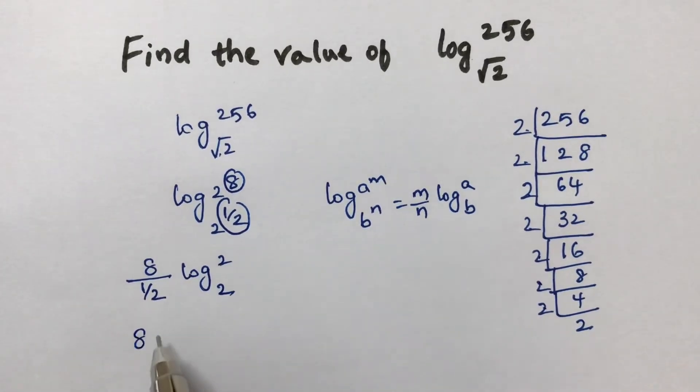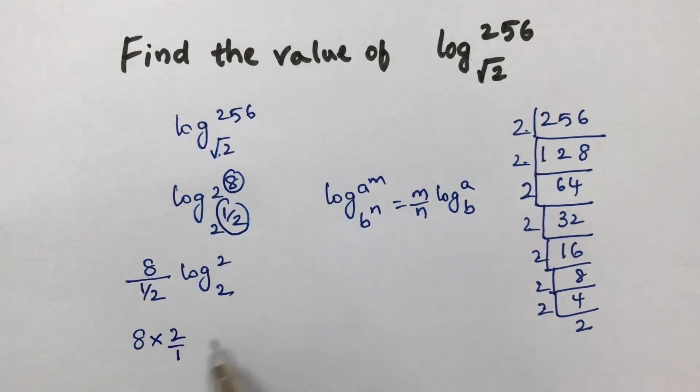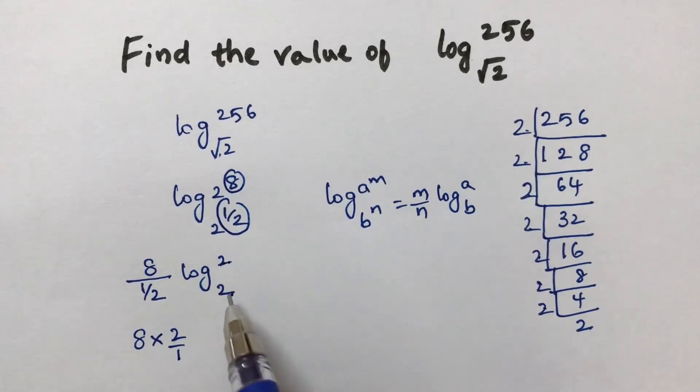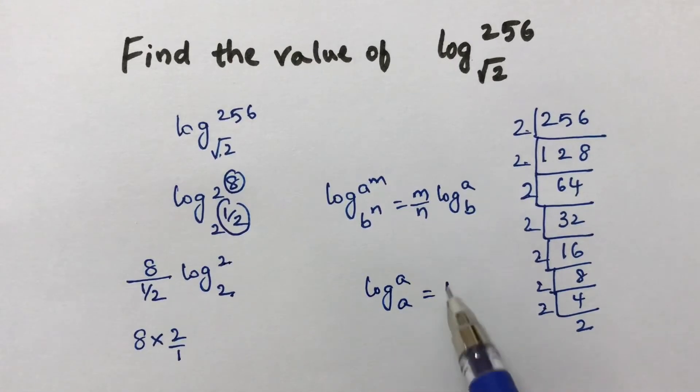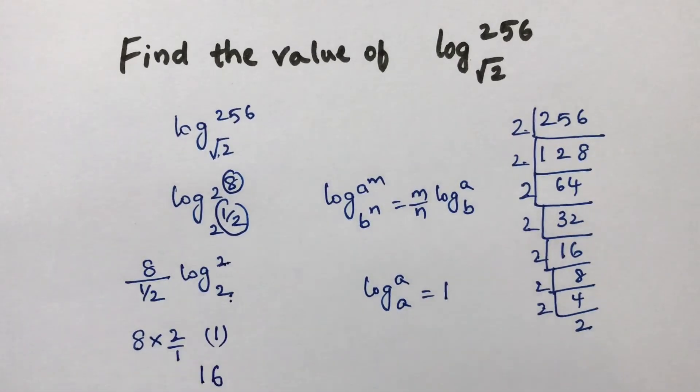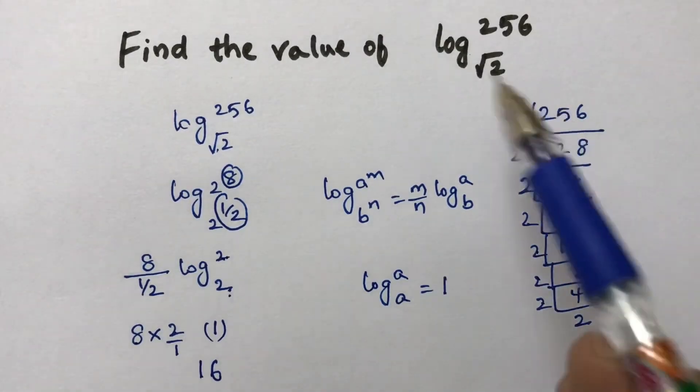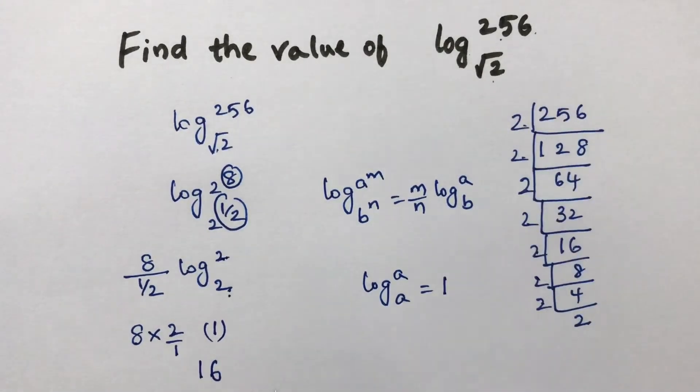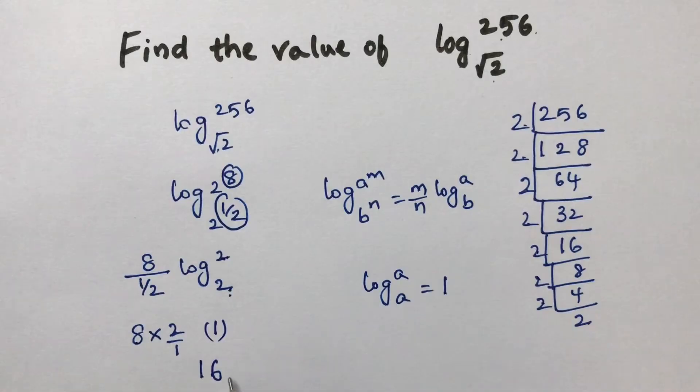This will become 8 times 2 by 1. And logarithm of a number to the same base, log a to the base a, is 1. So 8 times 2, the answer is 16. The value of log 256 to the base root 2 is 16.